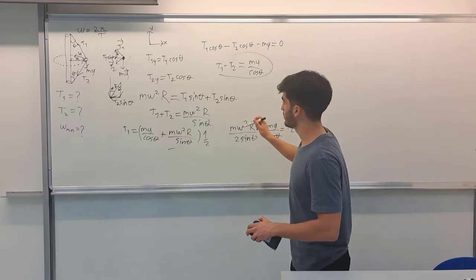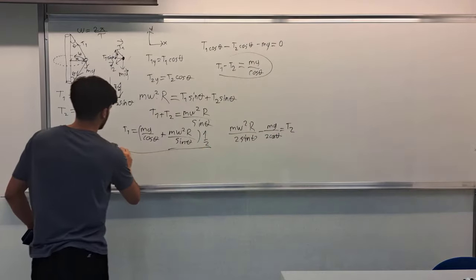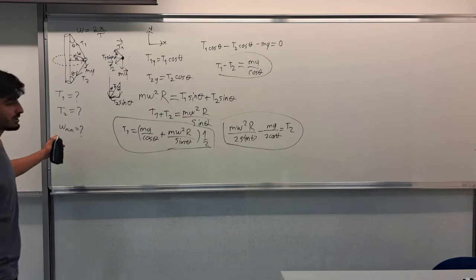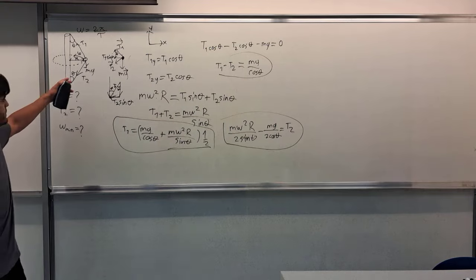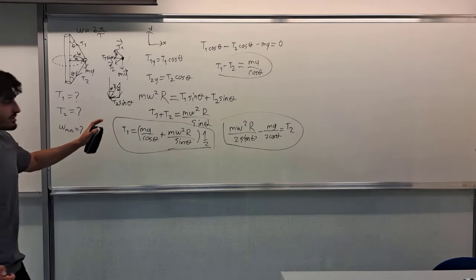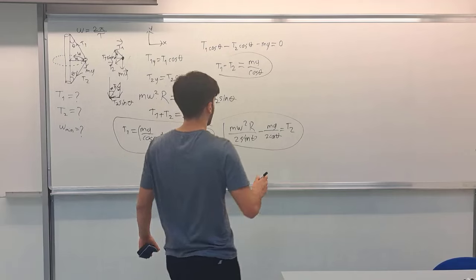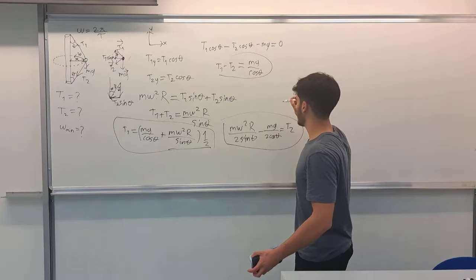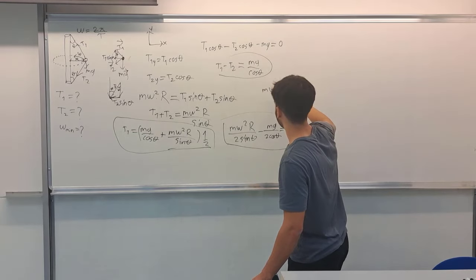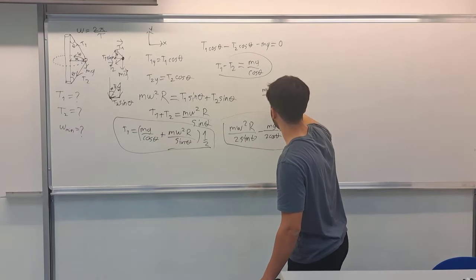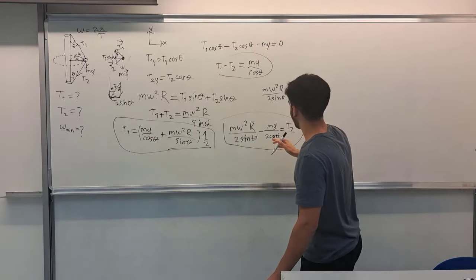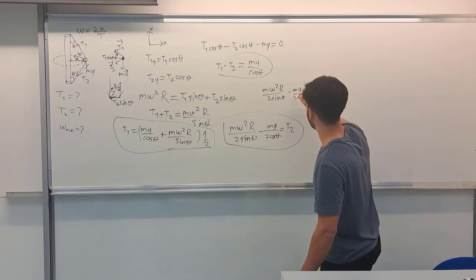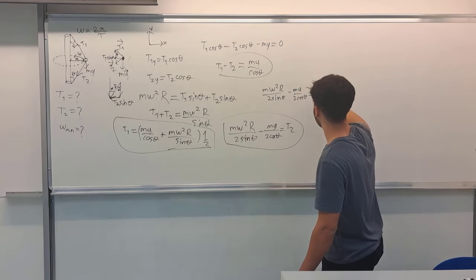Now, I find T1 and T2 with these equations. Now, final question, what should be omega min for T2 to still exist, and this tension in the rope. So for T2 to exist, m omega squared r over 2 sin theta minus this should be greater or equal to m g over 2 cos theta. It should be greater or equal to 0.